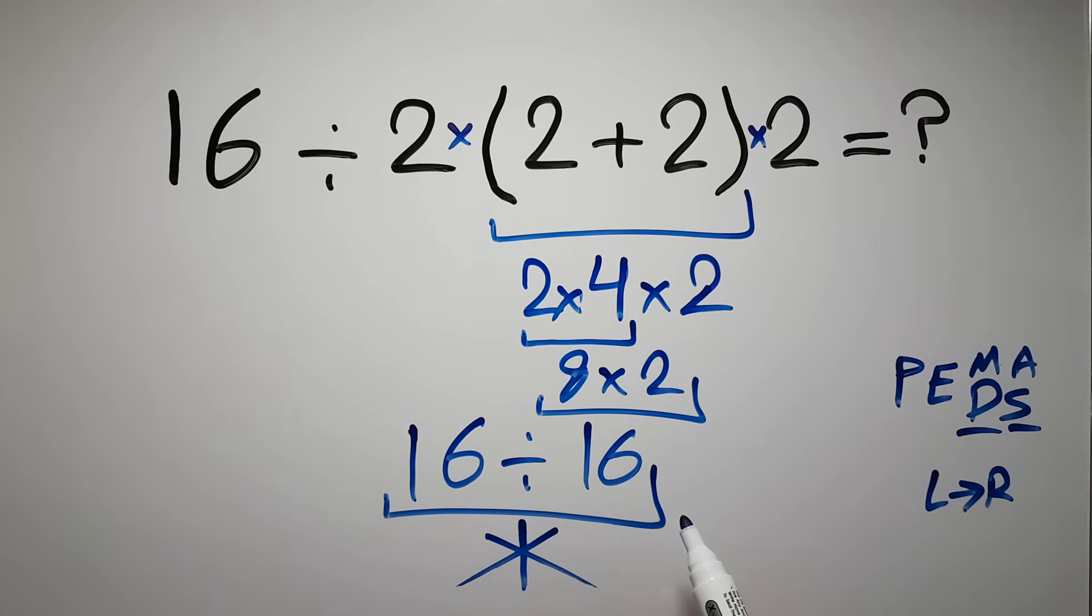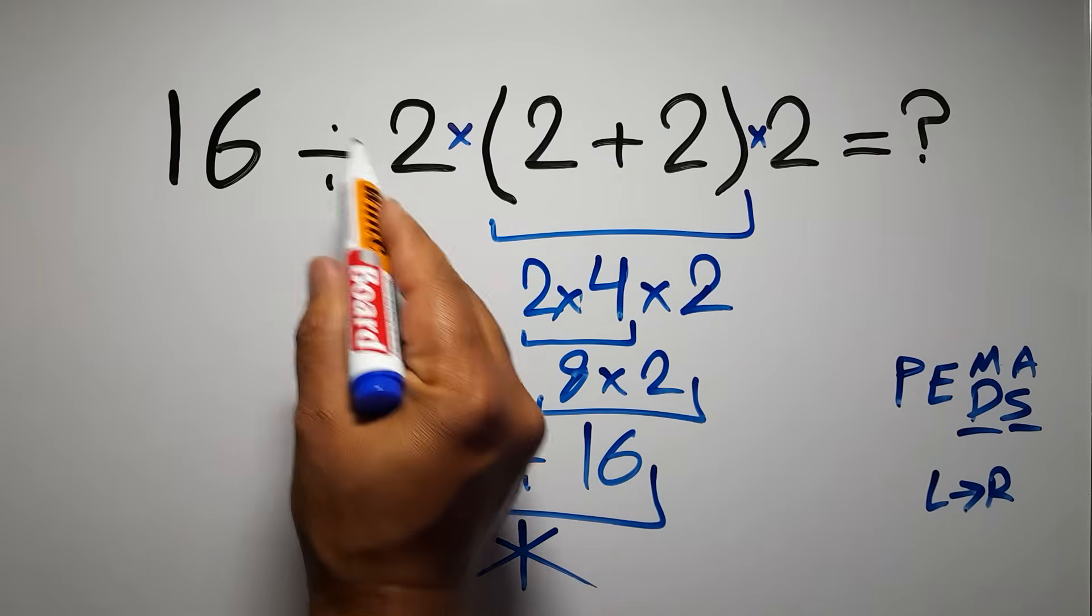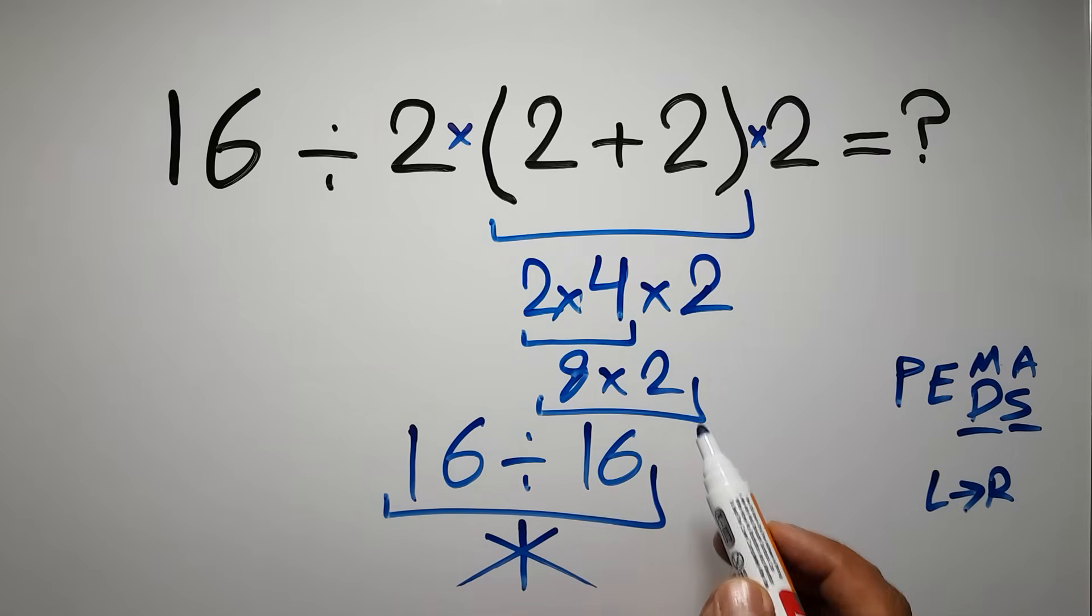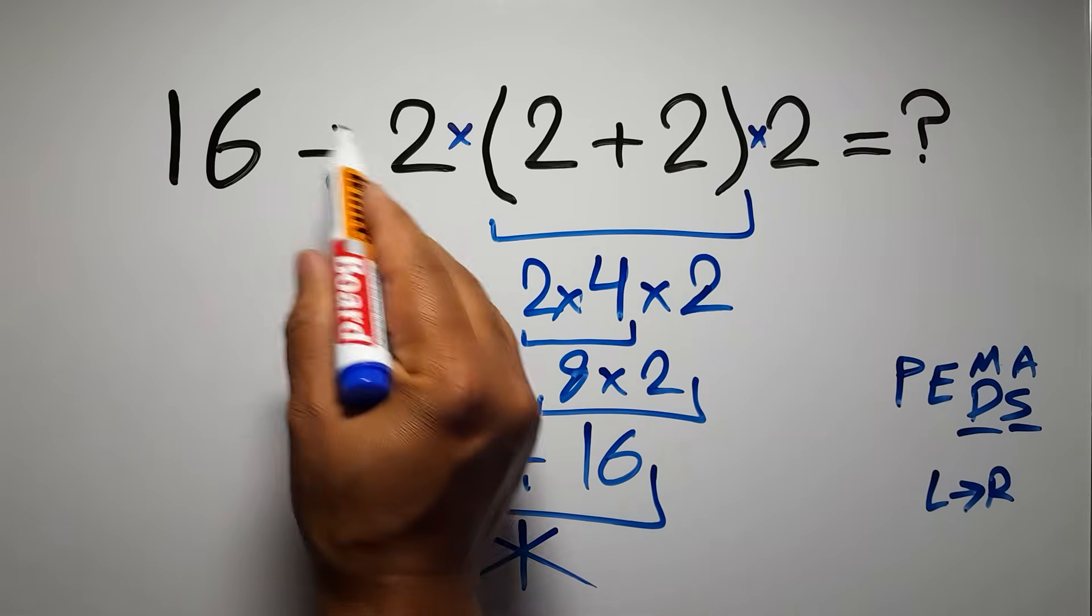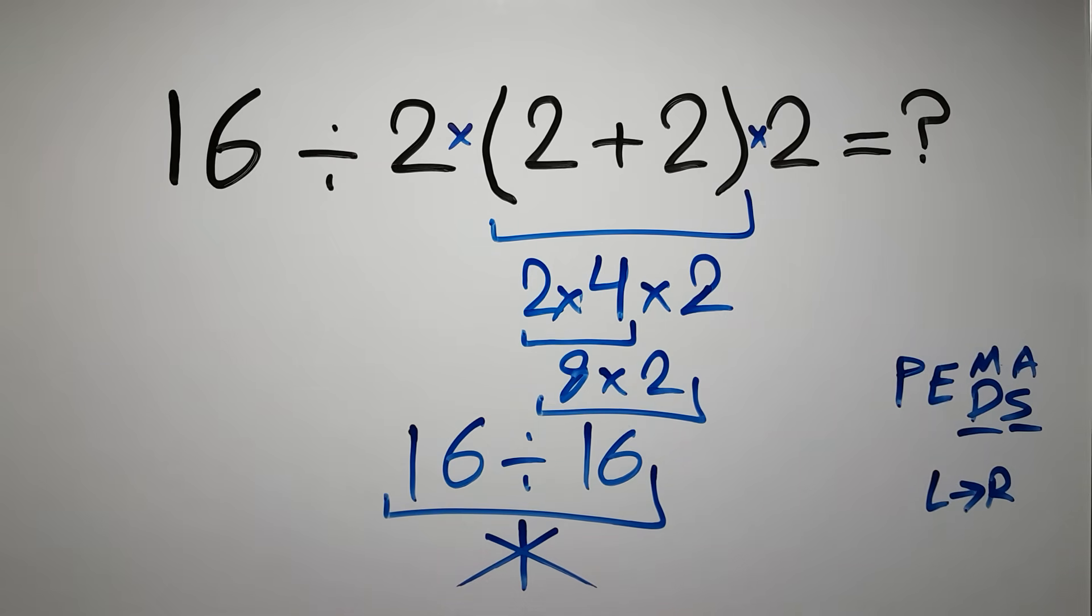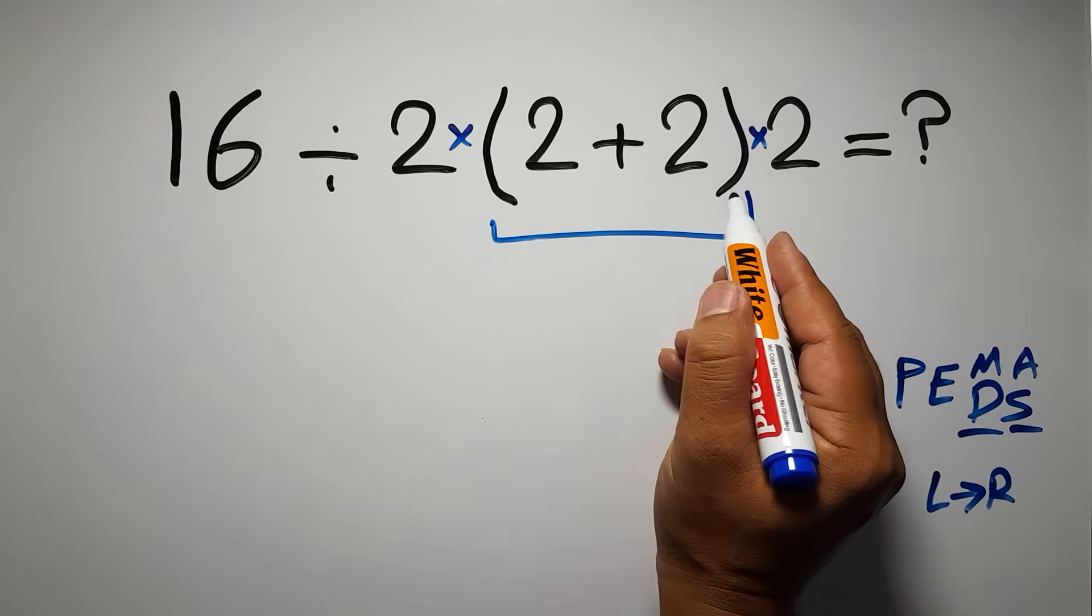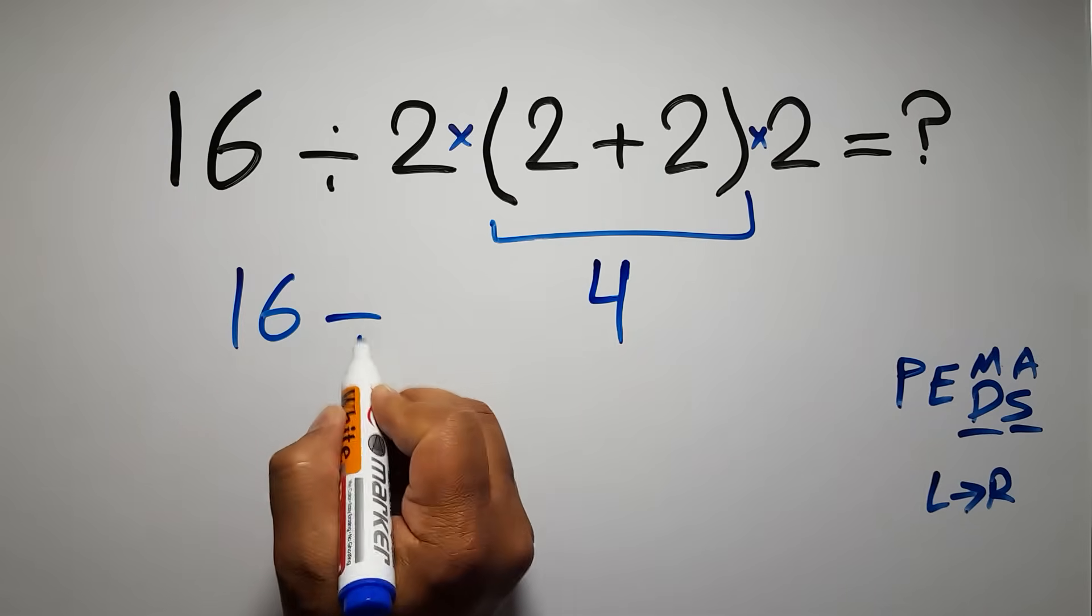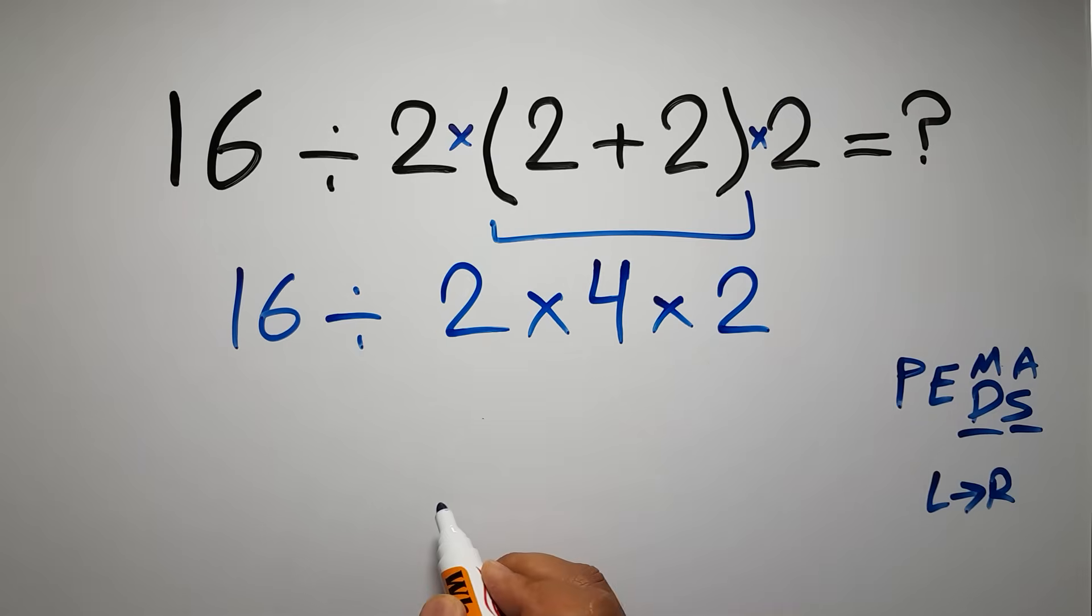So therefore, first we have to do the parentheses, then this division, then this multiplication, and finally this multiplication. If you do this multiplication before this division, it is wrong. So first, the parentheses: 2 plus 2 gives us 4. So 16 divided by 2 times 4 times 2. Now we have to work